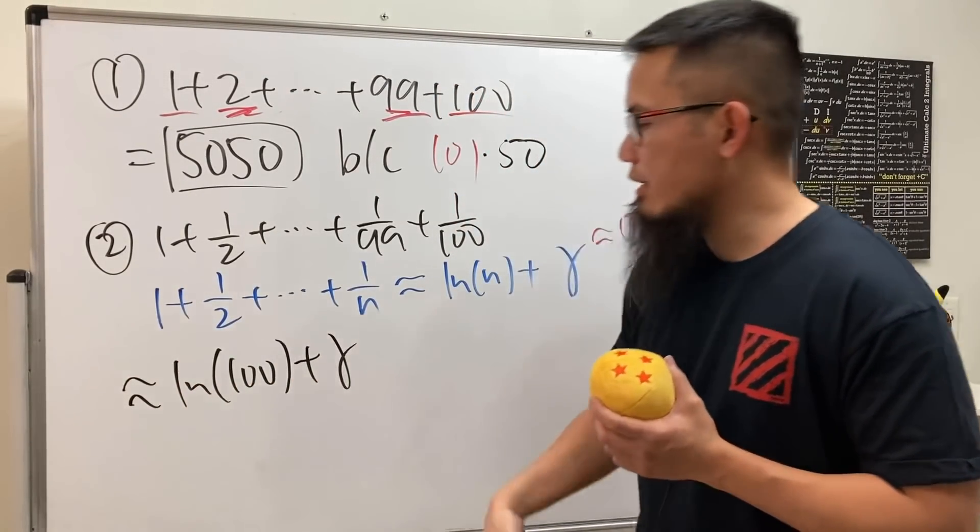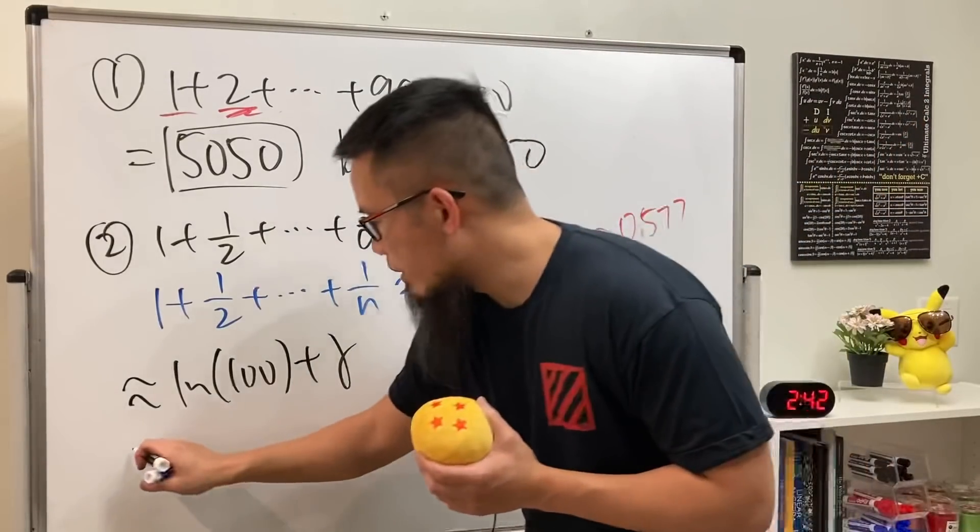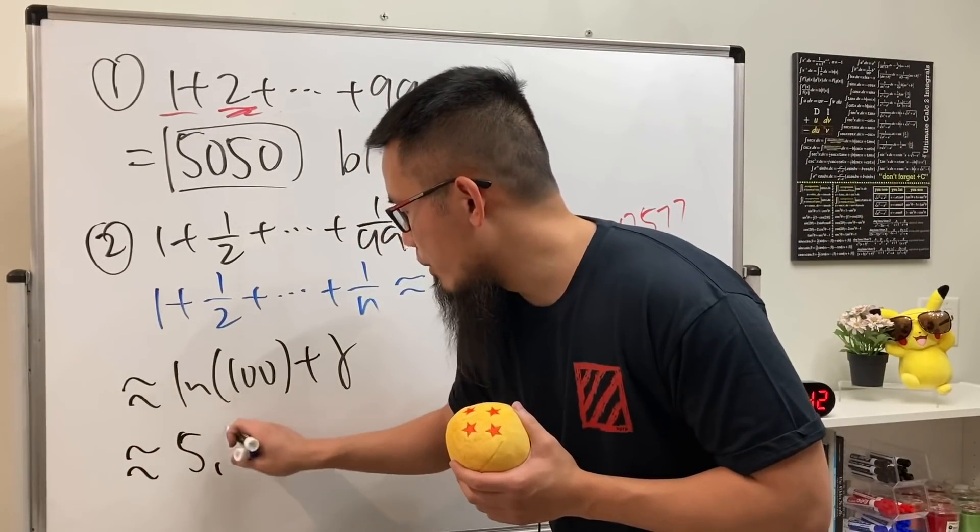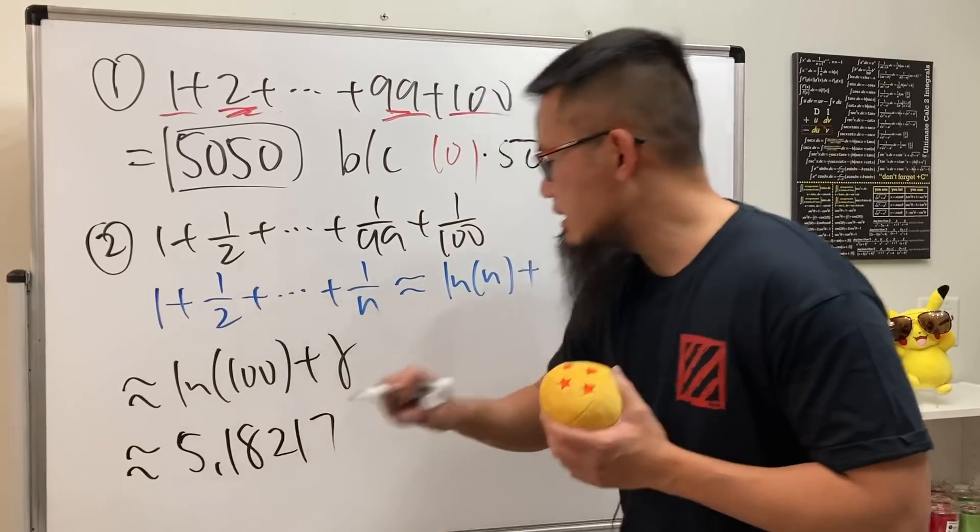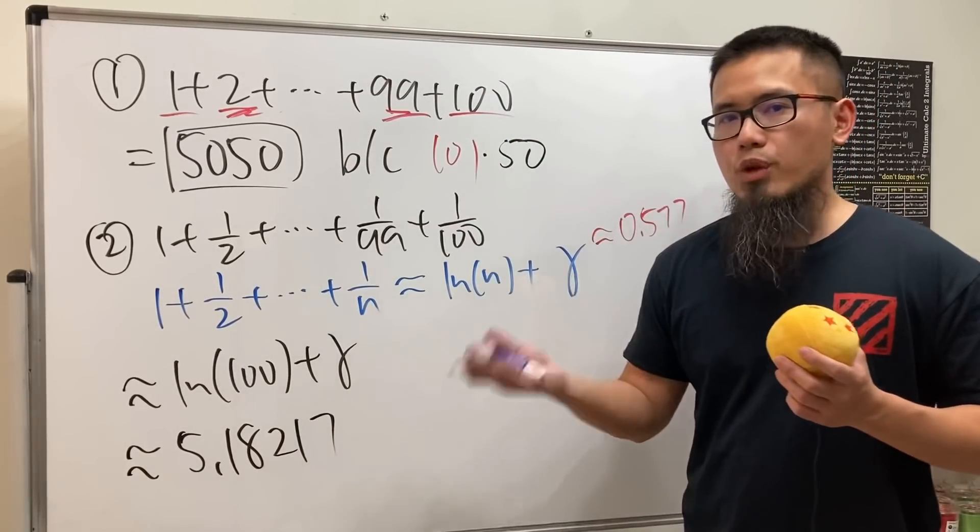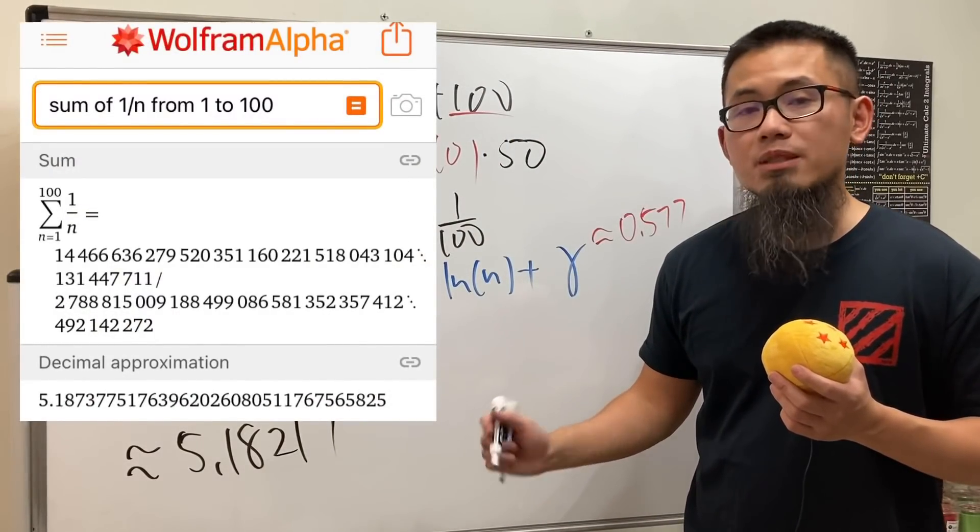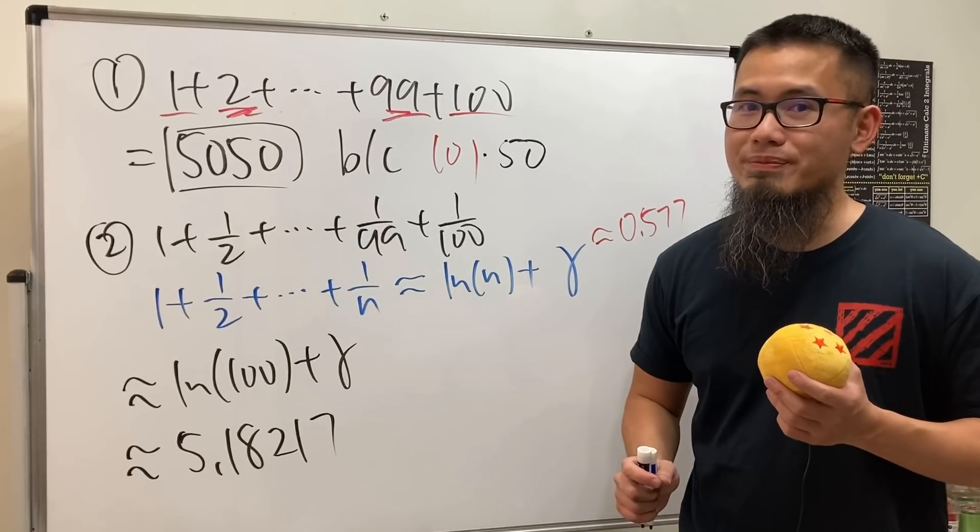And then just use the calculator if you like, and this right here is approximately 5.18217. And as you can see on the screen right here, the approximation very close to the actual value. Very cool, huh?